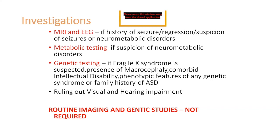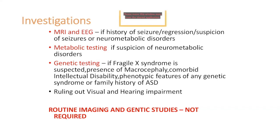Ruling out sensory impairment is extremely important, because naturally a child with either visual or hearing impairment cannot be expected to have the kind of language and social skills as a typical child. This should be ruled out very, very early — in many countries it's part of newborn screening. But if it hasn't been done, prior to confirming your diagnosis of ASD, you should certainly ask for it.